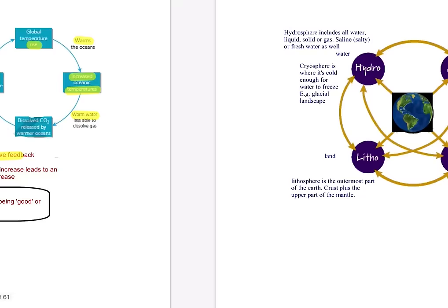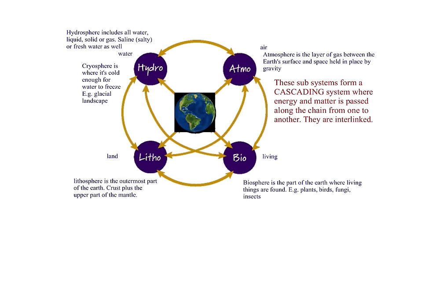Linking these together: you've got the hydrosphere, atmosphere, lithosphere, and biosphere. In short, the hydrosphere includes all water — liquid, solid, and gas, typically salt and fresh water. Your atmosphere is that layer of gas. Your biosphere is the part of the earth where we have living things. And the lithosphere is the outermost part of the crust. The diagram shows the interactions between each one.